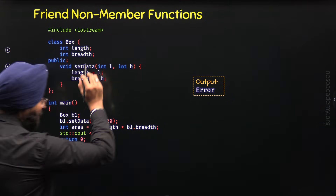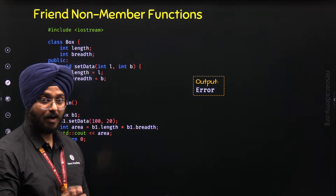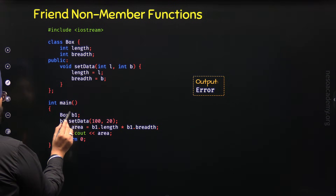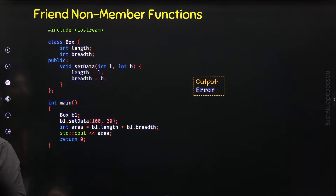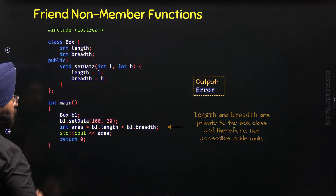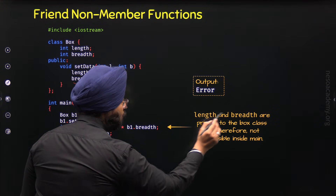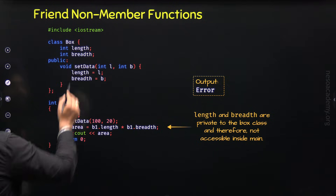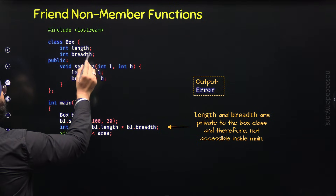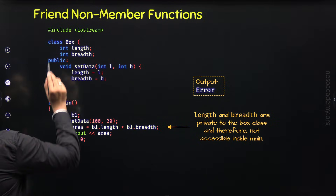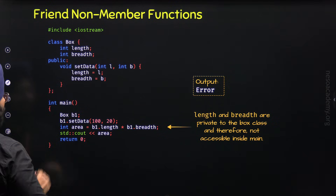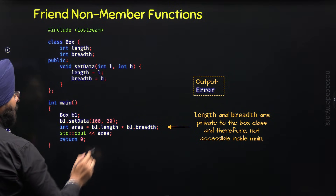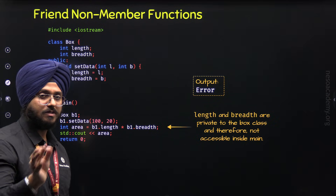Why are we getting an error from the compiler? Here we are accessing length and breadth properties through object b1, but that is not possible because these are private members. Length and breadth are private to the box class and therefore not accessible inside the main function. They are only accessible within the class itself, not outside it.